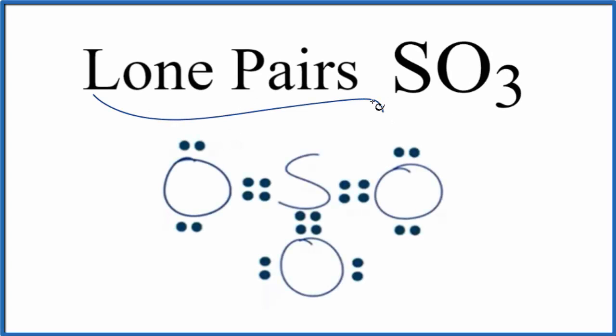Let's determine the number of lone pairs for SO3. This is sulfur trioxide and we'll need a valid Lewis structure in order to find the lone pairs. This is probably the best Lewis structure for SO3. The formal charges are all zero.